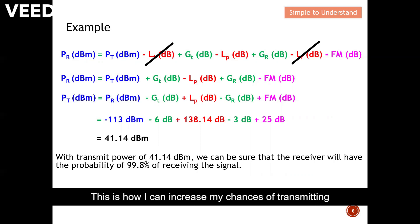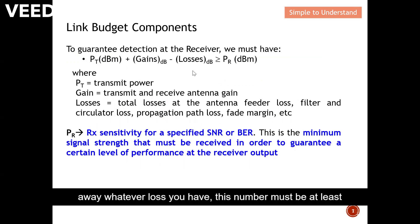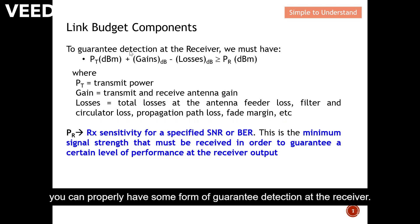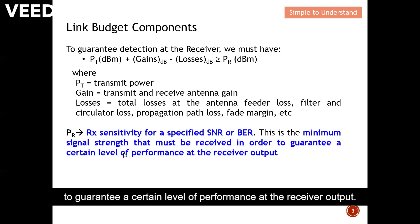So 41.14 dBm is the transmit power needed to achieve 99.8% confidence. To guarantee detection at the receiver, the transmit power plus all gains minus all losses must be greater than or equal to the receiver sensitivity. Receiver sensitivity is normally specified in terms of a signal-to-noise ratio or bit error rate, representing the minimum signal strength needed to guarantee a certain level of performance at the receiver output.